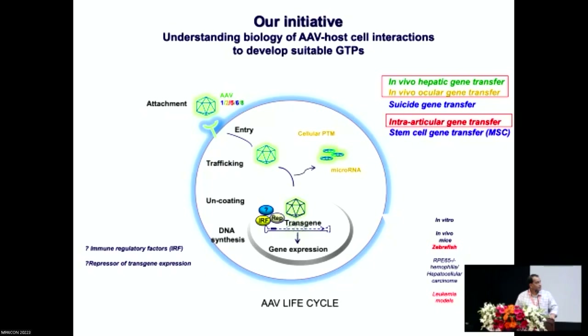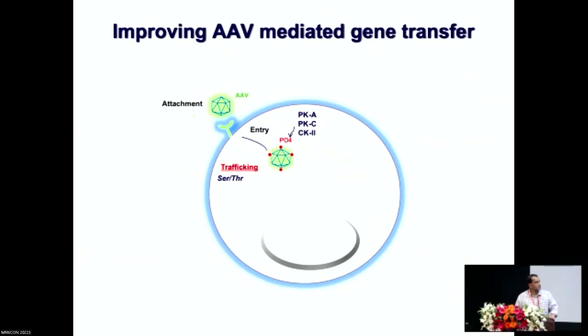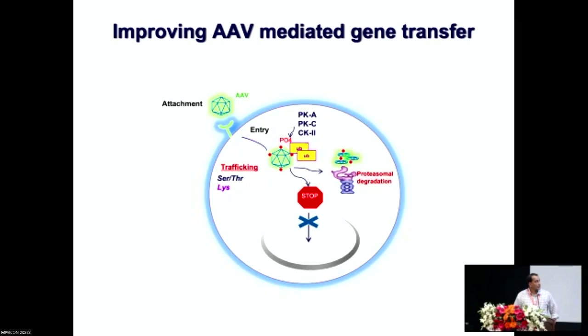The first approach we took is called capsid bioengineering. Once the virus binds to your cell surface receptor, it gets internalized and must be trafficked to the nuclear compartment. During this process, we hypothesized that the virus is being phosphorylated at specific residues on the coat protein — the viral capsid. This phosphorylation serves as a trigger for ubiquitination of the viral capsid, and ubiquitinated proteins can be proteasomally degraded. As a result, if I use 100 viral particles to target a single hepatocyte, less than 30 make it to the nucleus — 70 are degraded — and we wanted to reverse this.